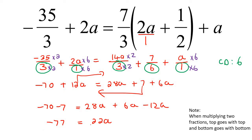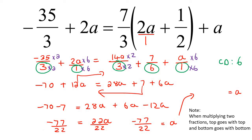Now you just divide this side by 22 and you do the same to this side. So a is going to be negative 77 over 22, and then you need to simplify that. You could put that on the calculator, and what we should eventually find is that a, once simplified, should be negative 7 over 2.